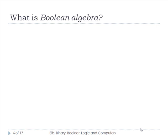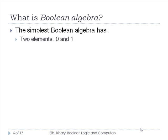So what is Boolean algebra? The simplest Boolean algebra has two elements: 0 and 1, also referred to as true and false, positive and negative. It also has two binary operators. A binary operator requires two inputs and yields a single output — A and B yielding some result, or A or B yielding some result: two inputs, one output.